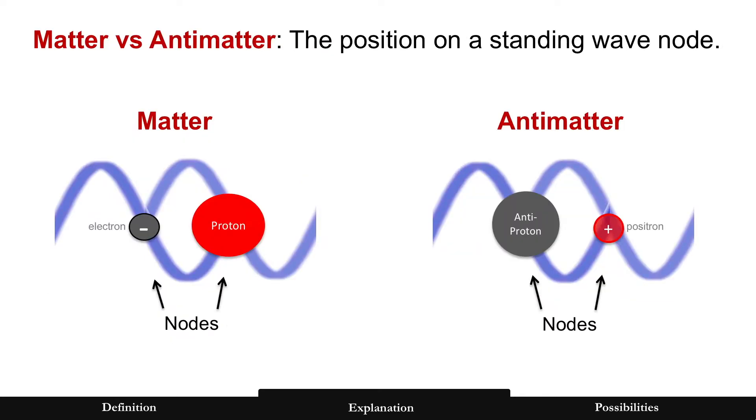Here's a better visual of it, of what makes matter. Those two different nodes on a standing wave, one belongs to an electron, and the other belongs to a proton in regular matter. And in antimatter, it's the opposite, antiproton and positron. But again, just two nodes.